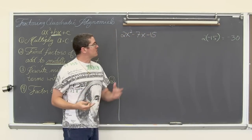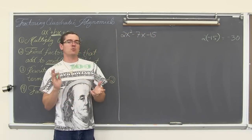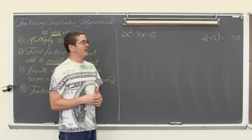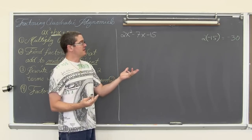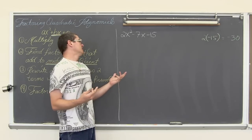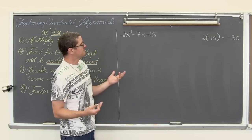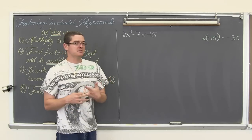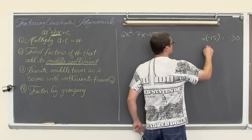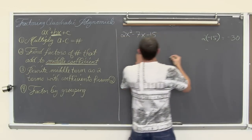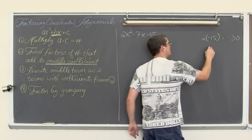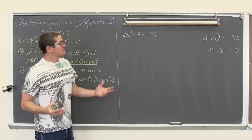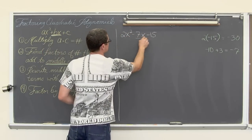Now we want factors of negative 30 that add to the middle term. We have 1 and 30, 2 and 15, 3 and 10. We have a middle term that is negative, so we want negative 10 and positive 3 — that equals negative 7. So let's use those numbers to rewrite the middle term.